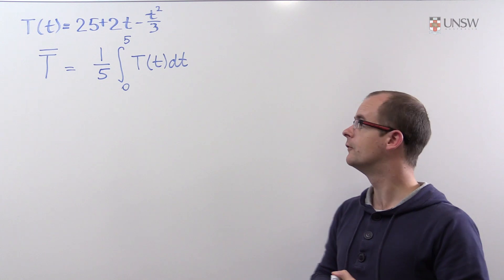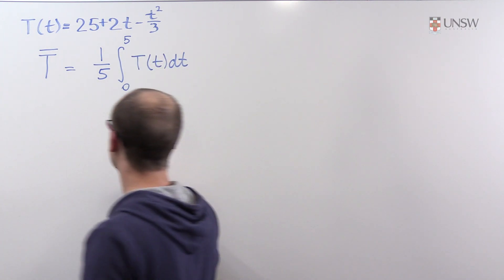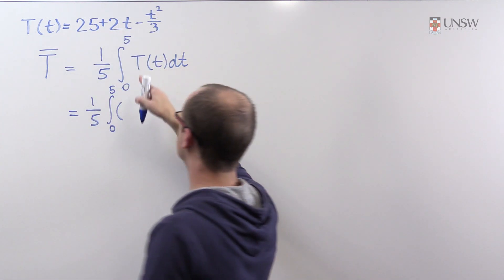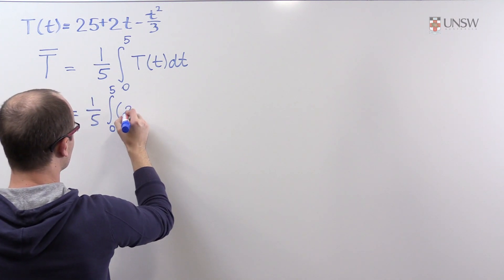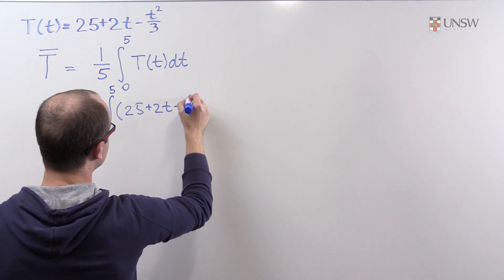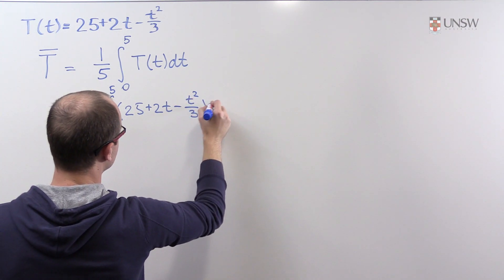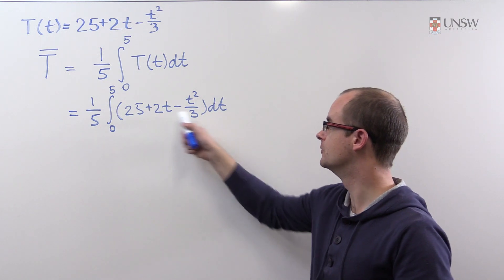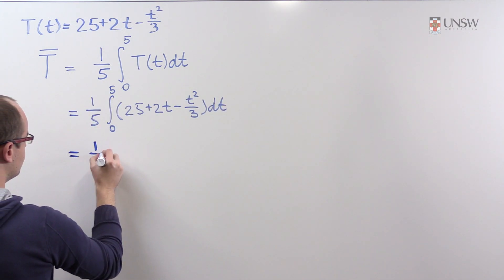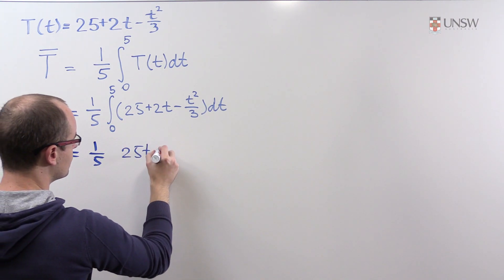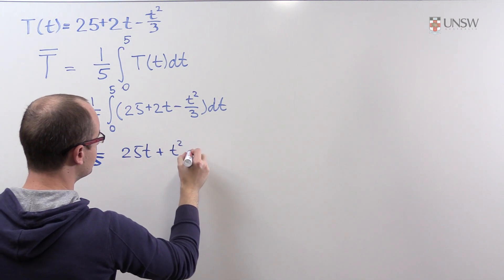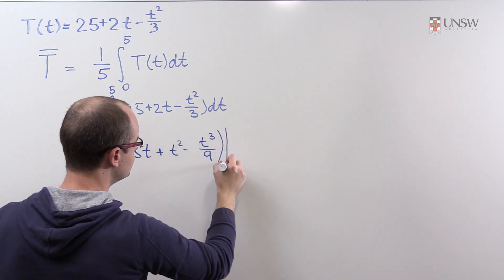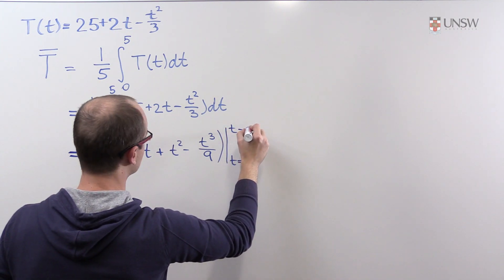Now let's find the value of this integral. We have 1 over 5, integral from 0 to 5, of the function T: 25 plus 2t minus t squared over 3, dt. Now we find the antiderivative of this quadratic function: 25t plus t squared minus t cubed over 9, evaluated from t equals 0 to t equals 5.